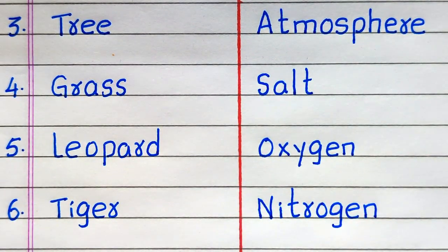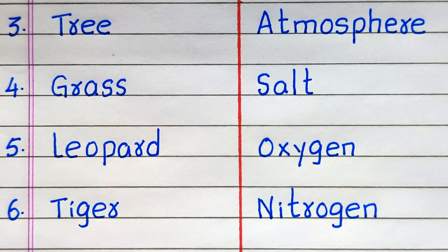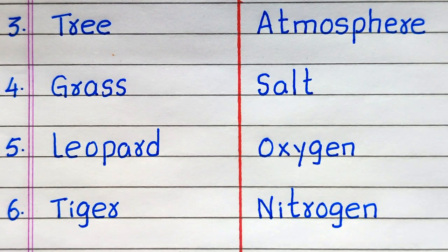3rd example of biotic factor is Tree, 4th Grass, 5th Leopard, 6th Tiger. 3rd example of abiotic factor is Atmosphere, 4th Salt, 5th Sunlight, 6th Nitrogen.